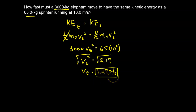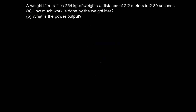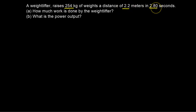This reminds us that the equation for kinetic energy — the energy of motion — is equal to ½mv². Now we'll take a look at a problem dealing with work and power. A weightlifter raises 254 kilograms of weights a distance of 2.2 meters in 2.8 seconds. How much work is done by the weightlifter?